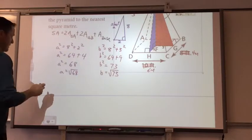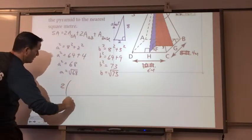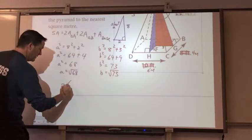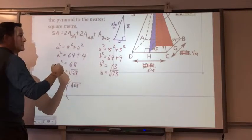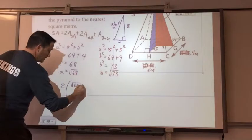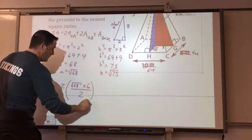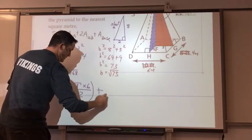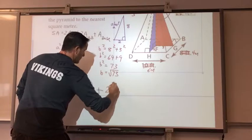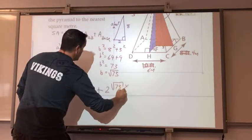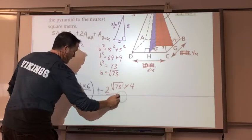Area of triangle A. So, triangle A is my purple one, so I'm going to do 2 times the area of triangle A. So, I have the height, square root of 68, times the base, times 6, divided by 2.